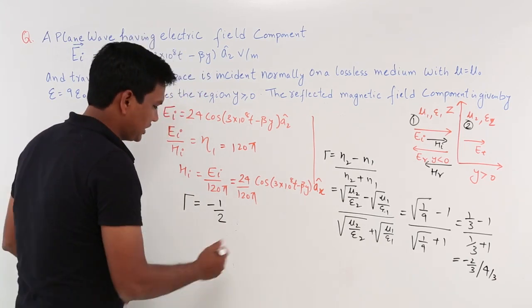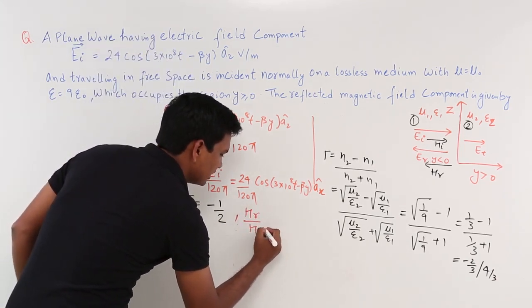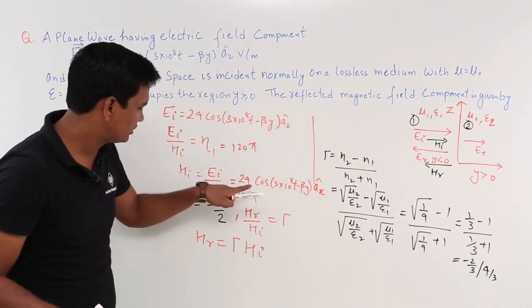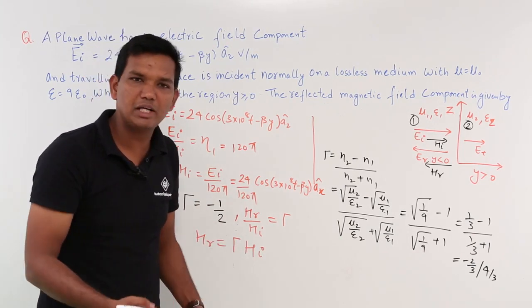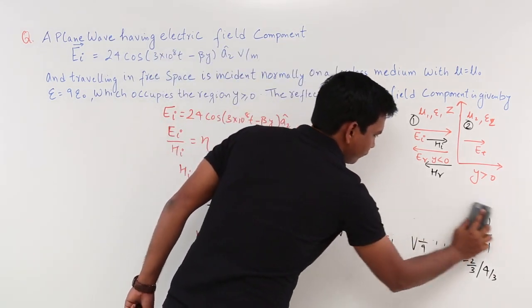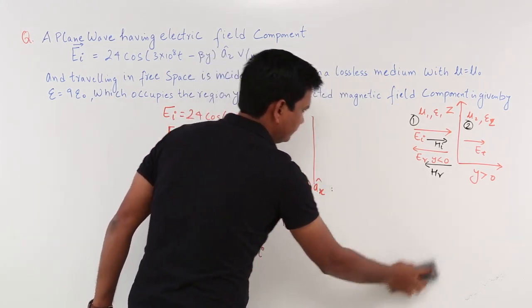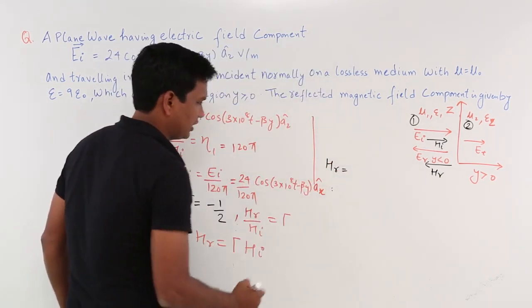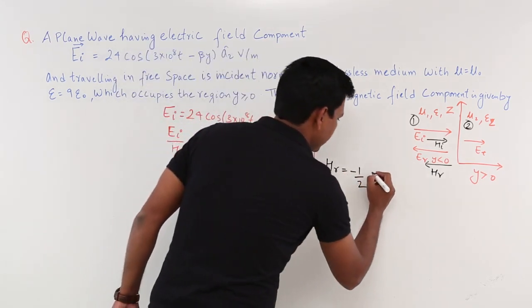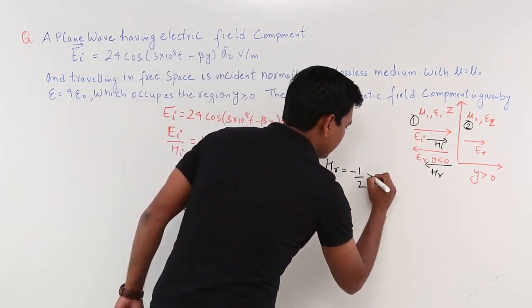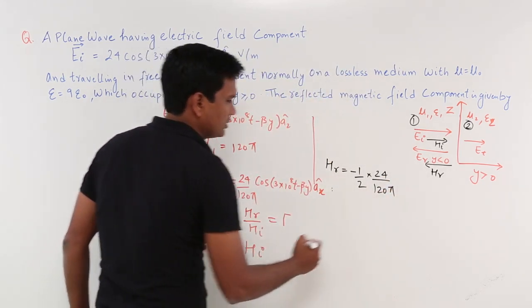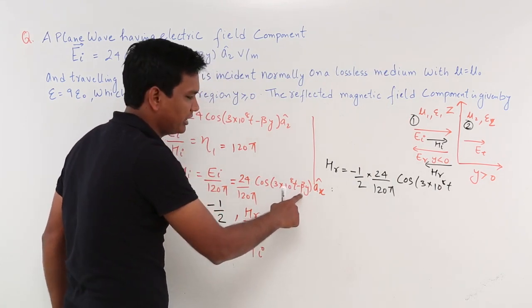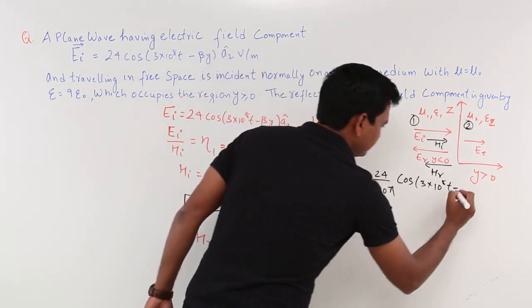Now since HR/HI = Γ, we get HR = Γ × HI = (-1/2) × 24/(120π) × cos(3×10⁸t - βy), and β = 1, so HR = (-1/2) × 24/(120π) × cos(3×10⁸t - y).